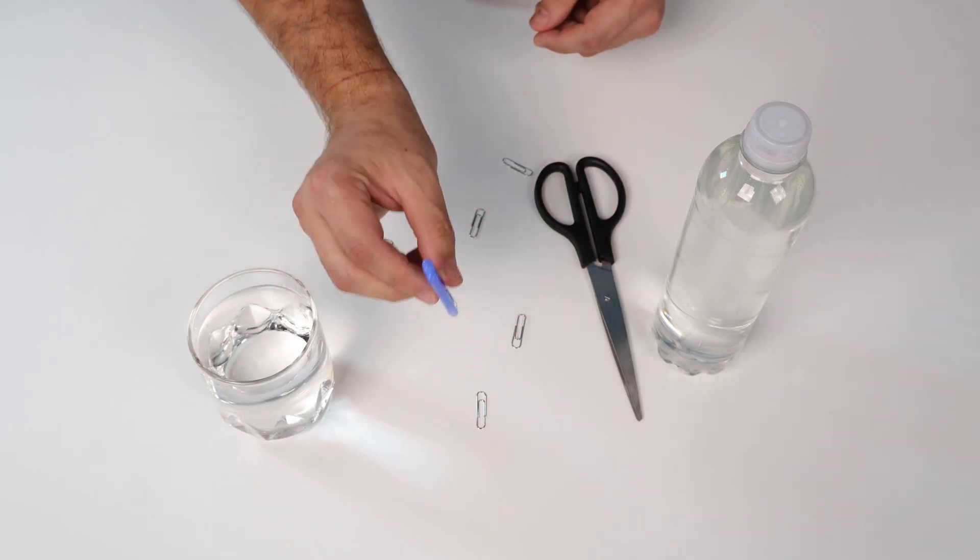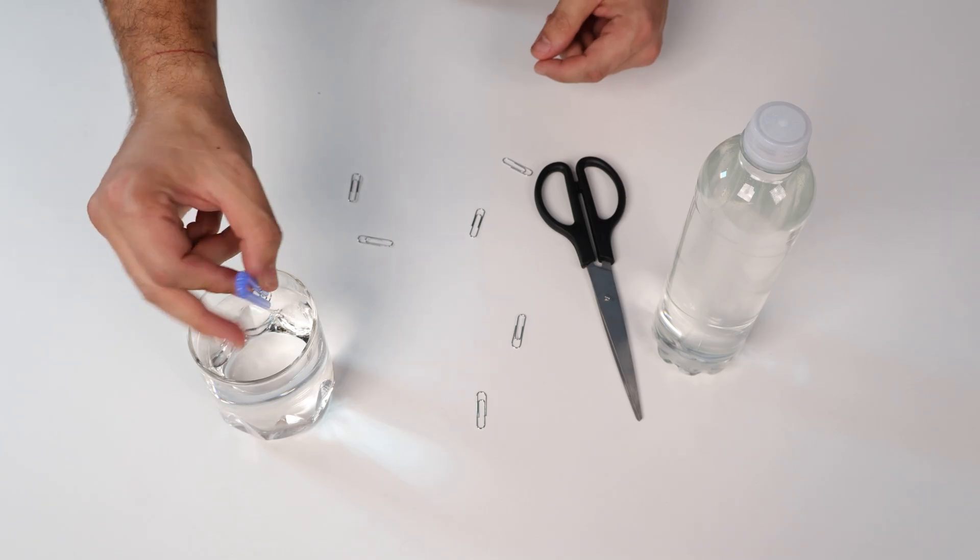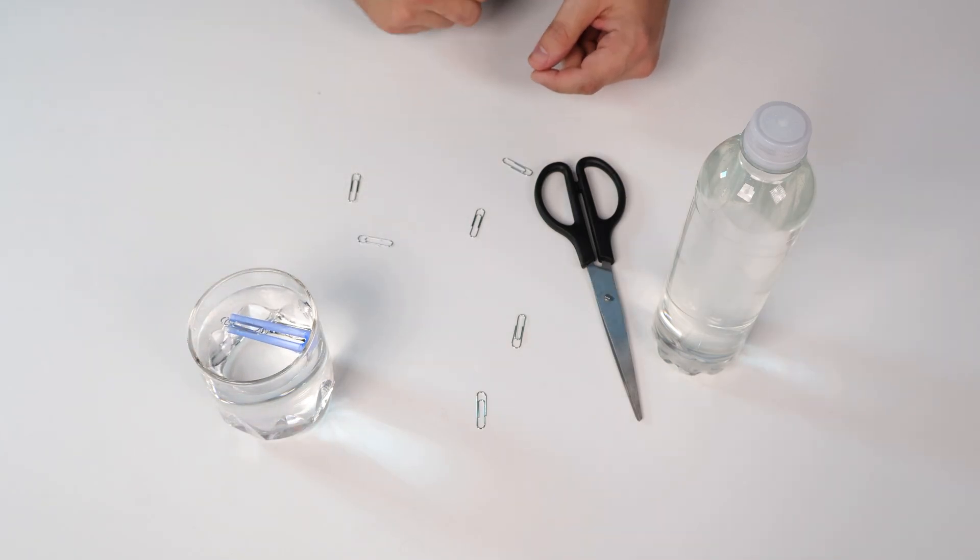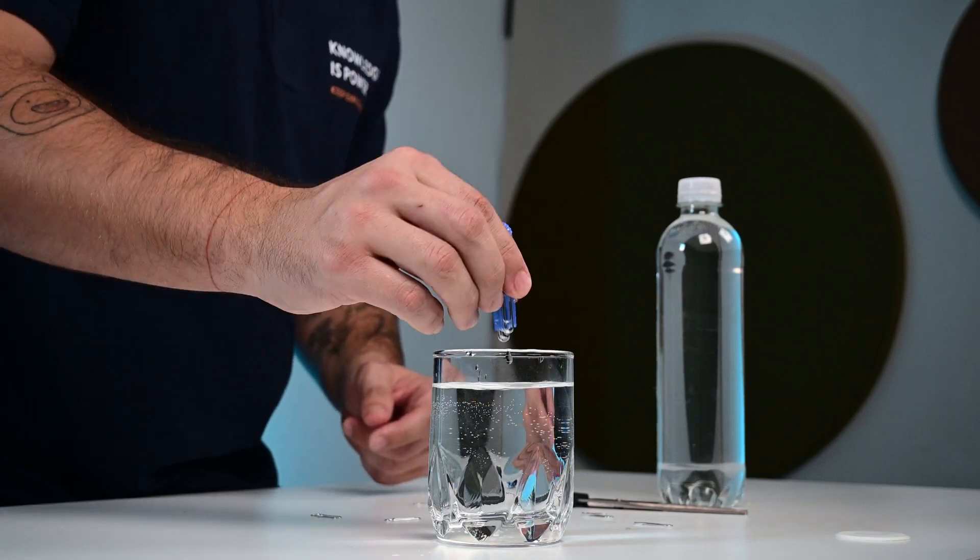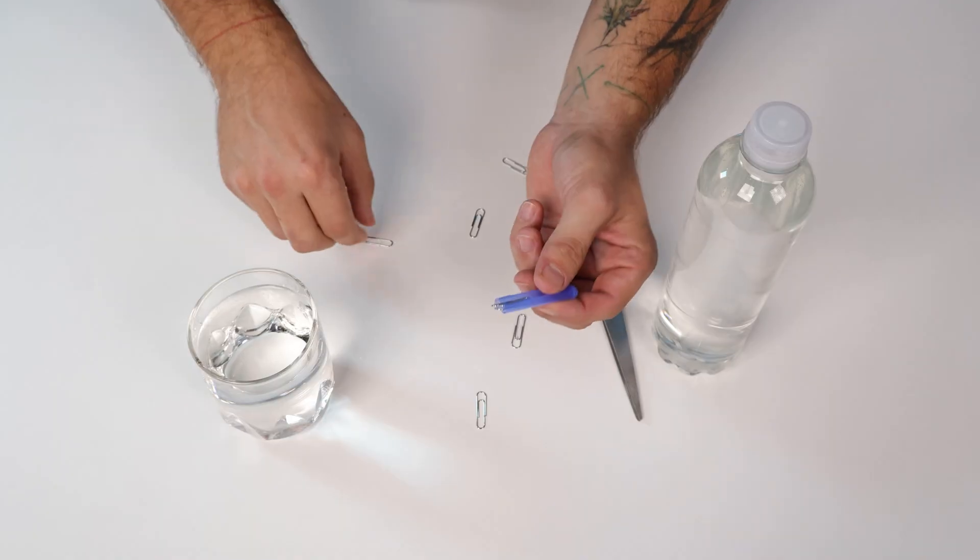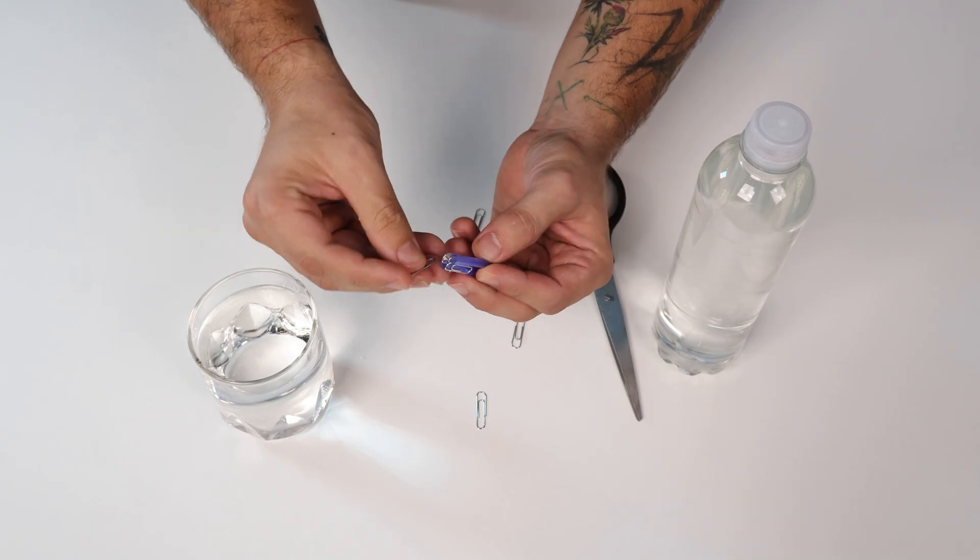Now to test if the diver is actually gonna dive, we put it into the glass of water. If it stays like this in a horizontal position, we will take it out, dry it a bit, and add more weight to it by adding more paper clips. Make sure you add paper clips to both sides.